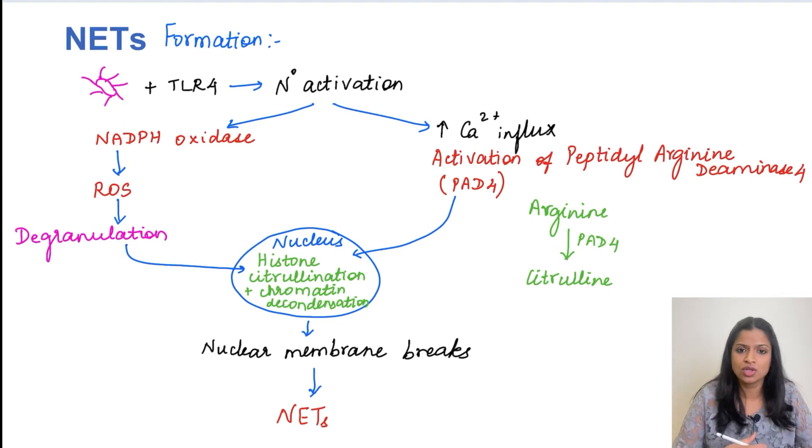So what happens when neutrophils get activated? It will lead to the formation of this NADPH oxidase complex and that will result in the formation of reactive oxygen species like HOCl. That we had already seen.